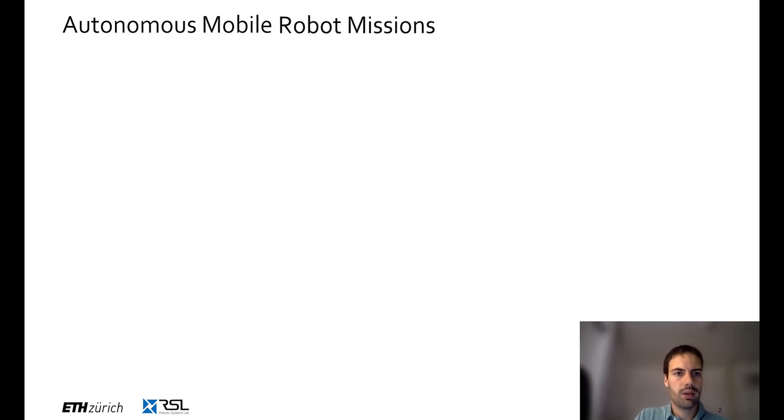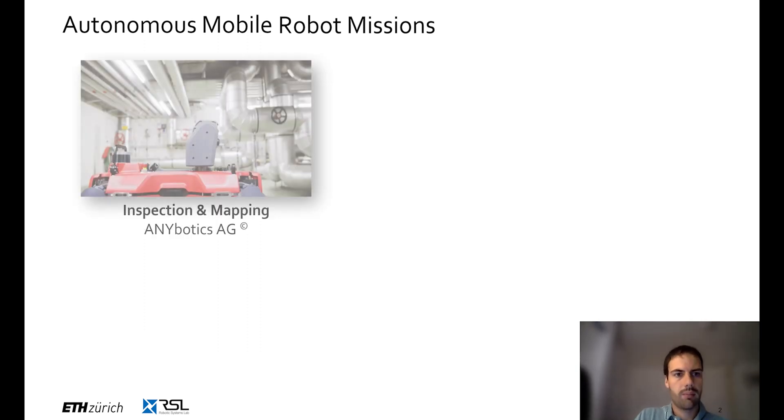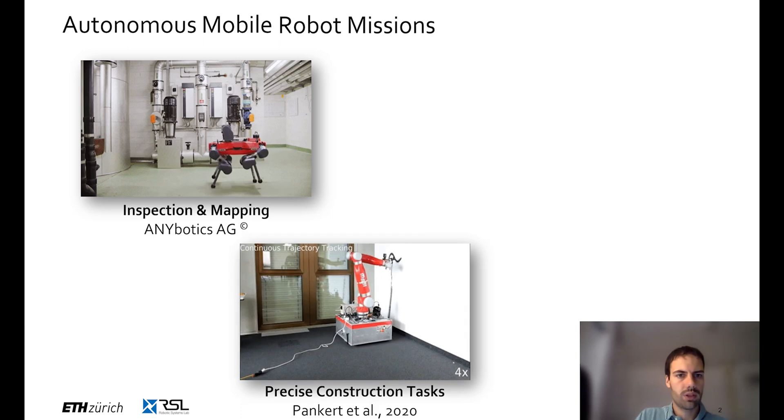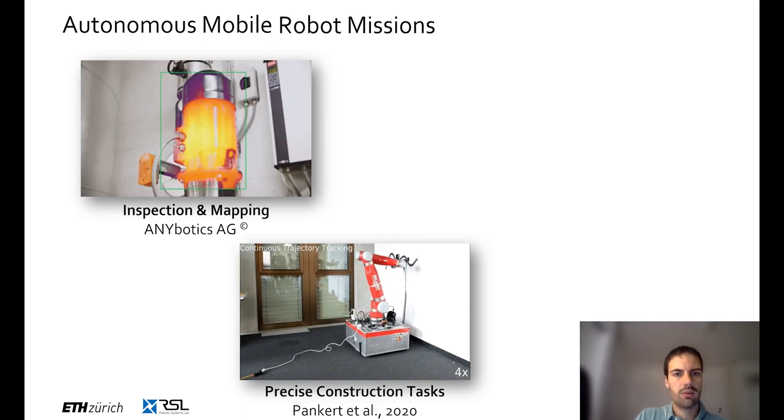Nowadays there are many useful autonomous robot missions already taking place, including inspection and mapping in industrial facilities, and indoor construction tasks where high precision and accuracy are required.